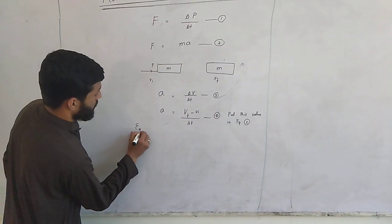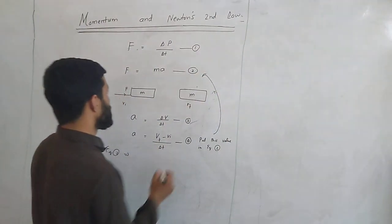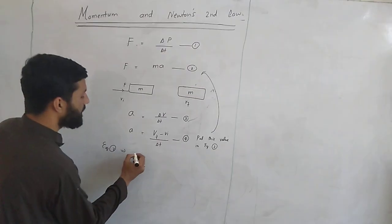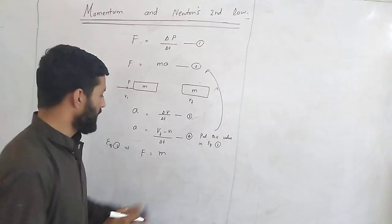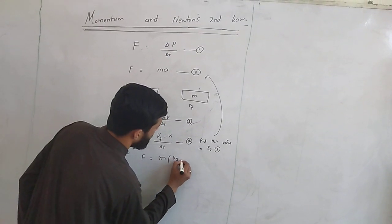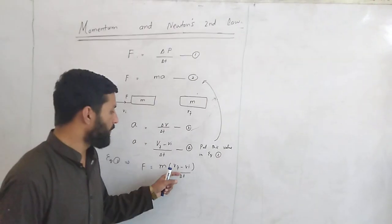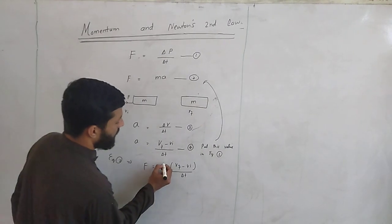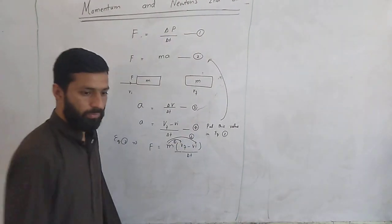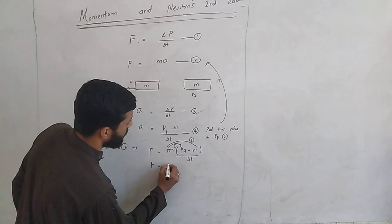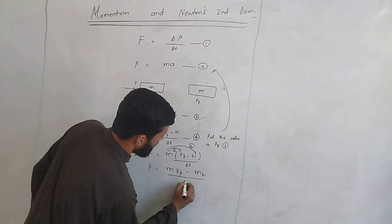Putting this value into equation 2, equation 2 will take the form F is equal to M, and here we put A is equal to VF minus VI divided by delta T. Since mass is in the product with both VF and VI, we multiply mass with each term. So this equation takes the form F is equal to M times VF minus M times VI, all divided by delta T.